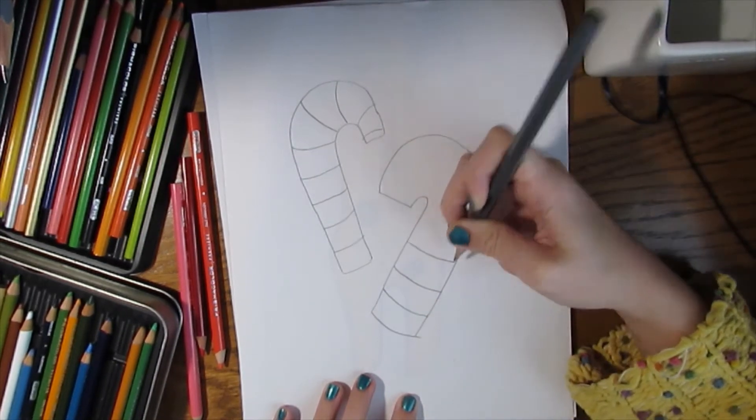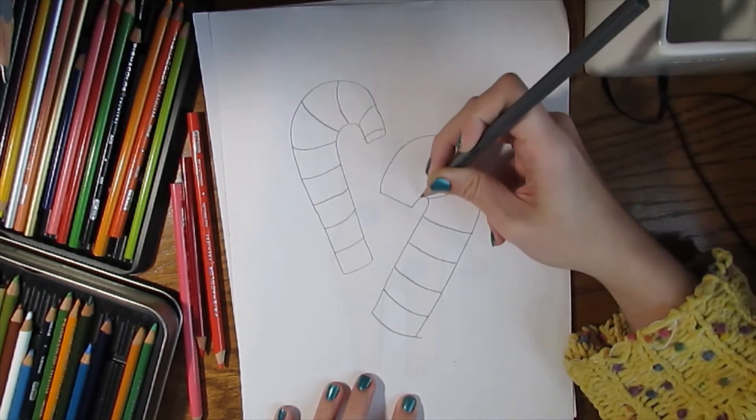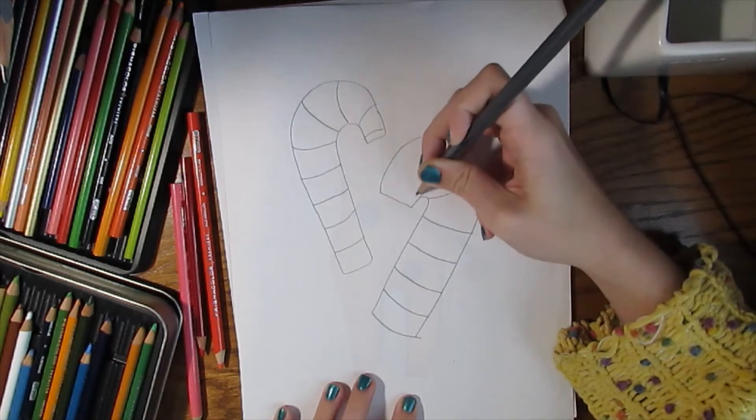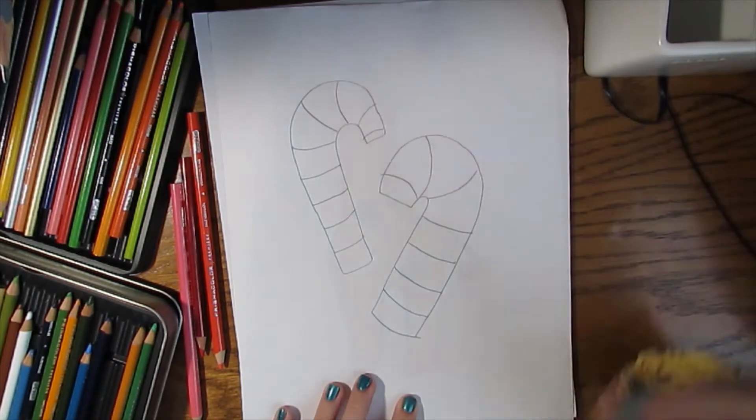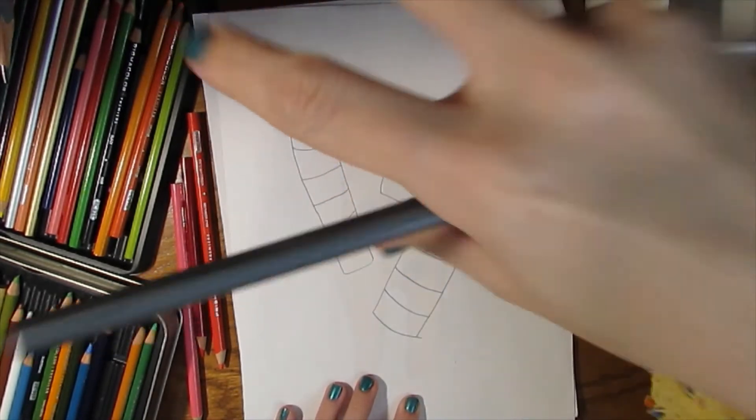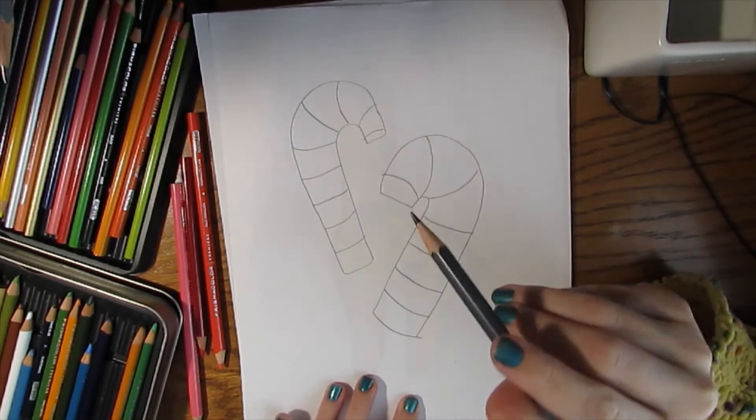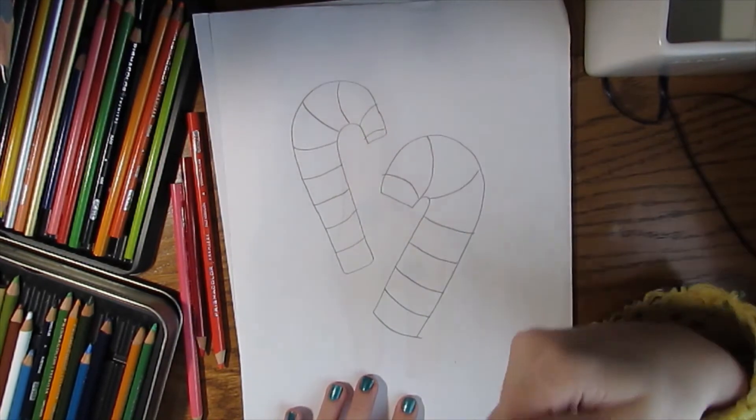We like to show where the light is on whatever we're drawing. For our candy canes, our light source is right here so we're gonna have a highlight. If you see something shiny, especially if it's made out of metal, it's got kind of like a white speck on it.